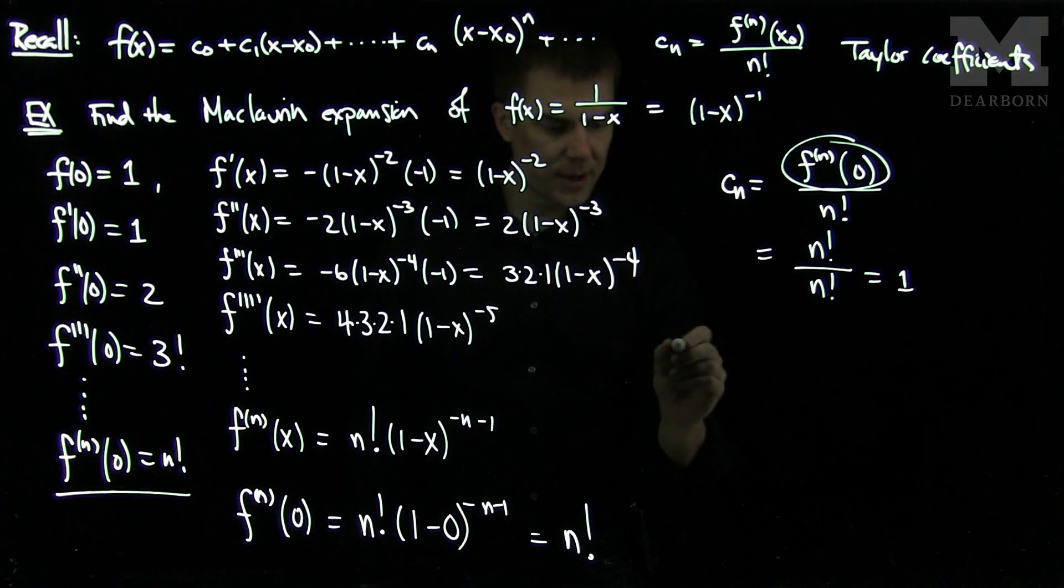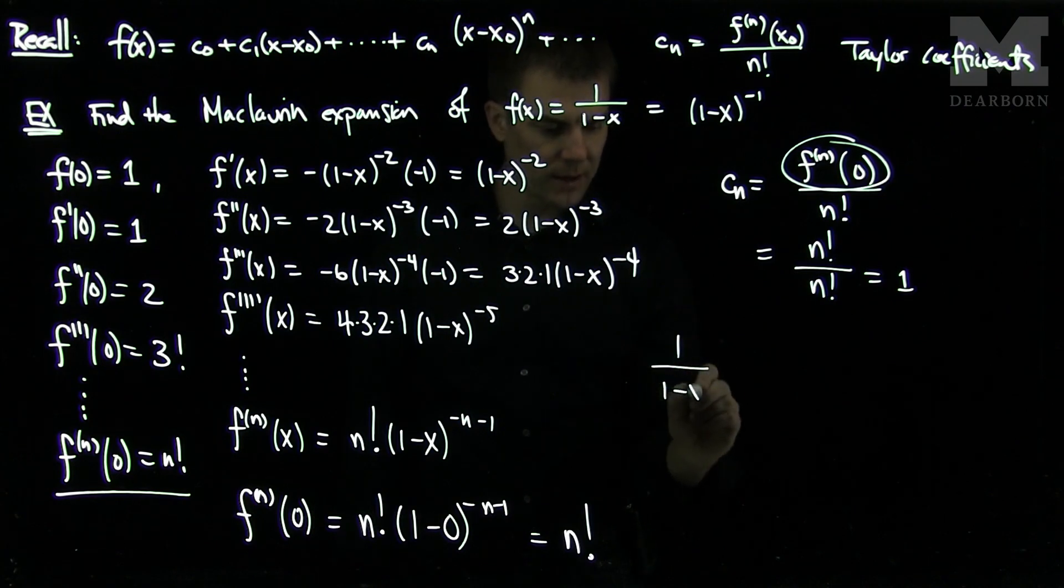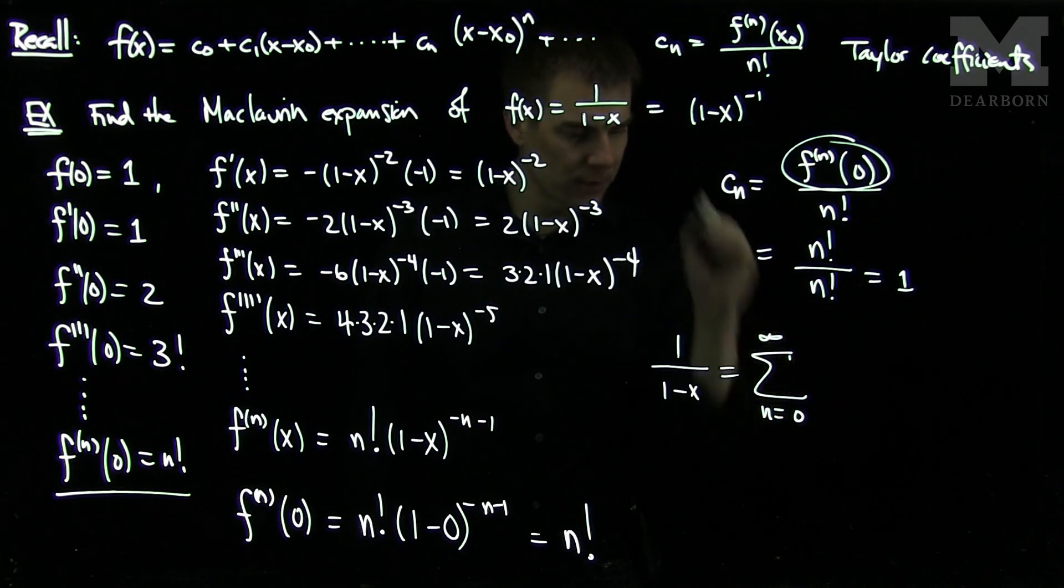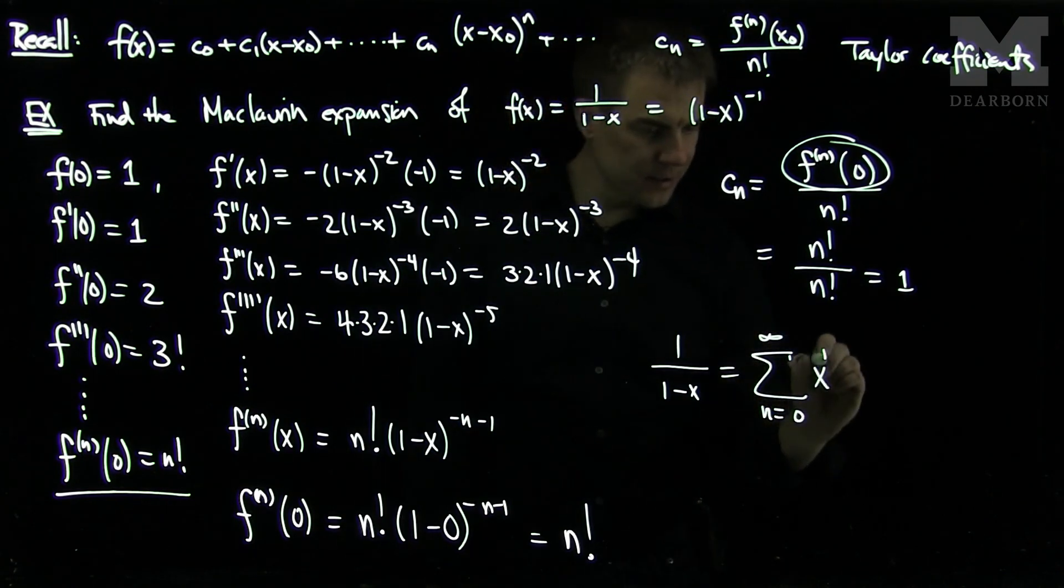And that tells us that the expansion 1 over 1 minus x is just the sum, n goes from 0 to infinity, of x to the n.